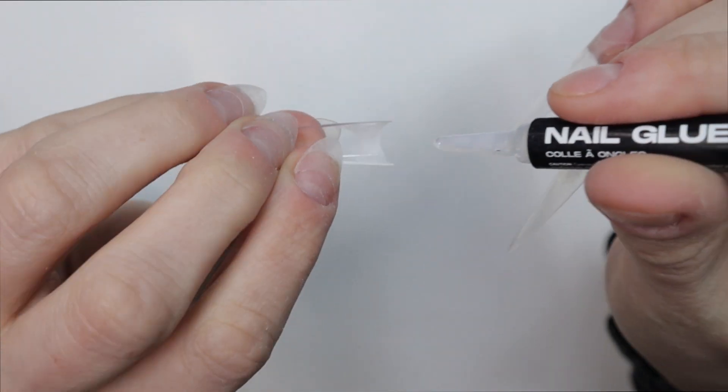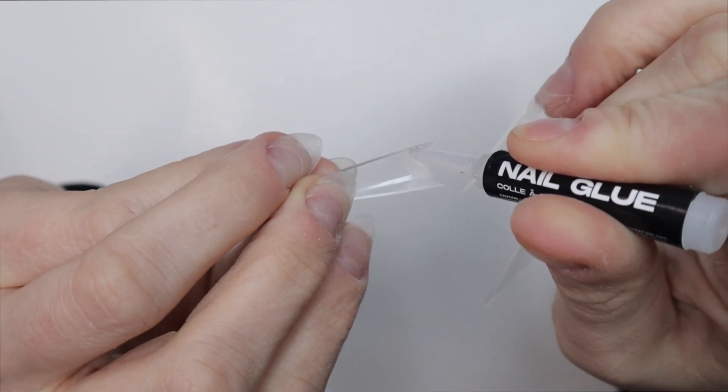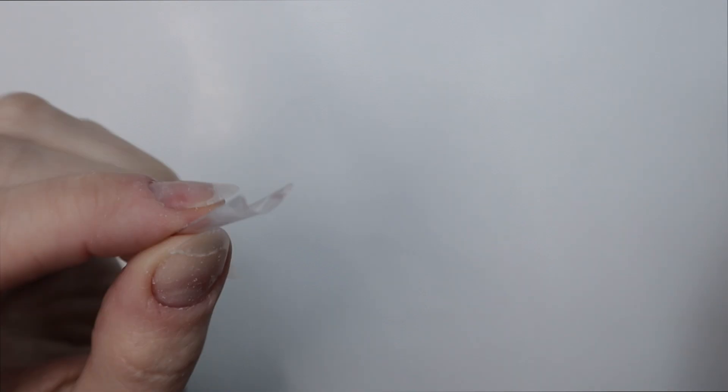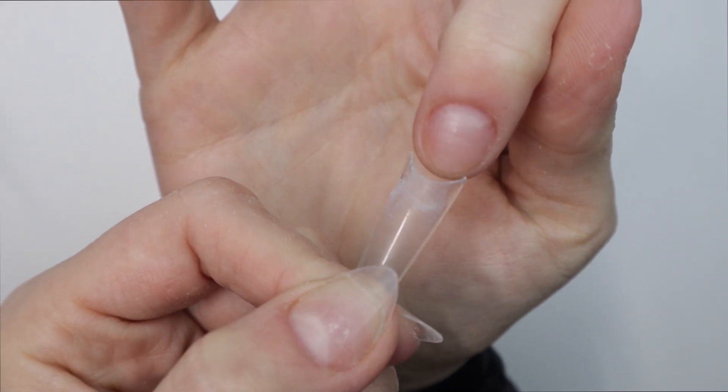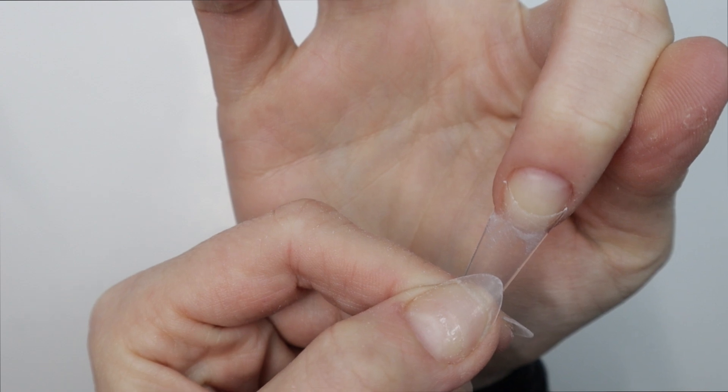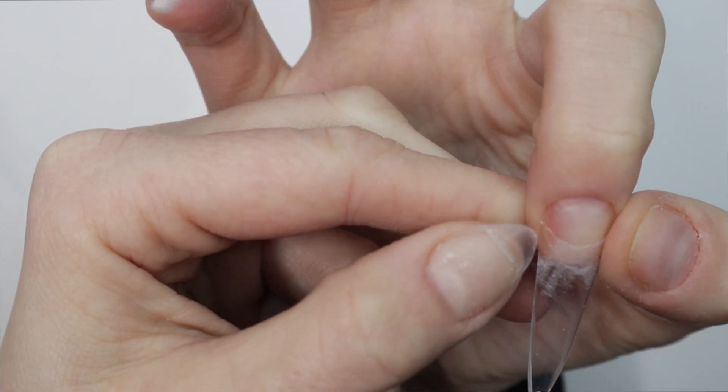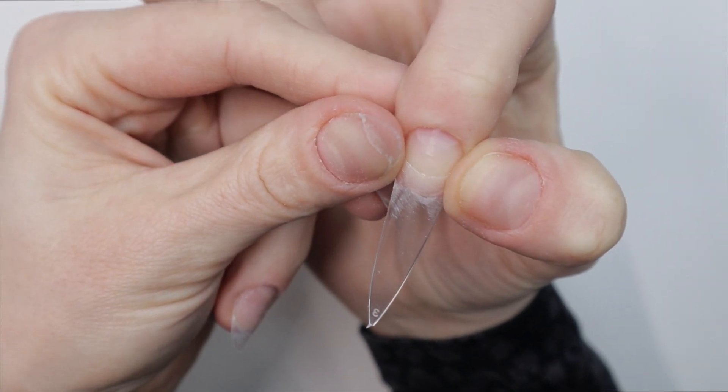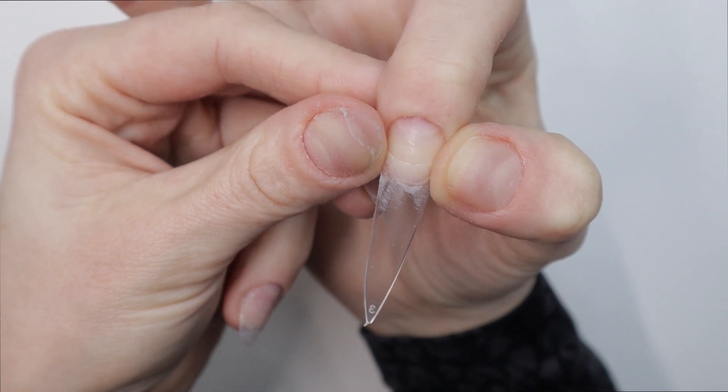I do want to note that if you have a slower drying nail glue or dip base or whatever kind of resin you use to be your tip glue, if it's slower drying you may find yourself holding the tip a lot longer to prevent the glue from coming up. I'm going to show you a little trick that you can do to make the glue dry a lot faster.